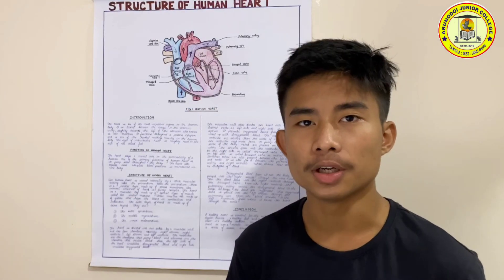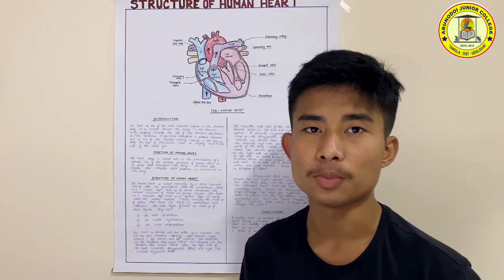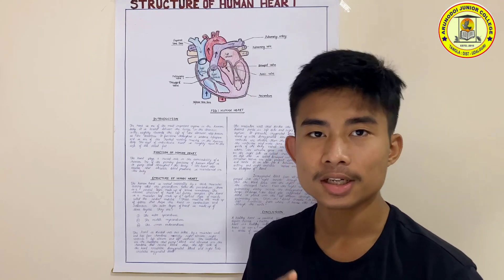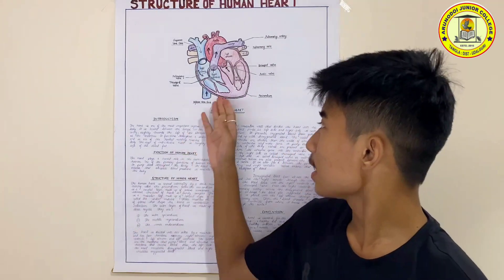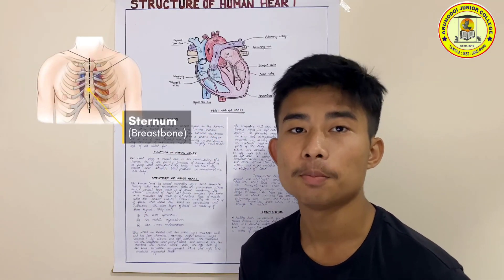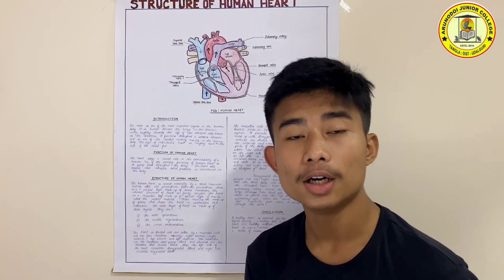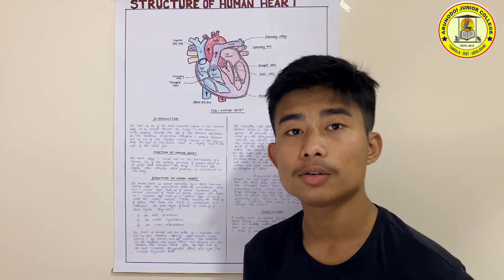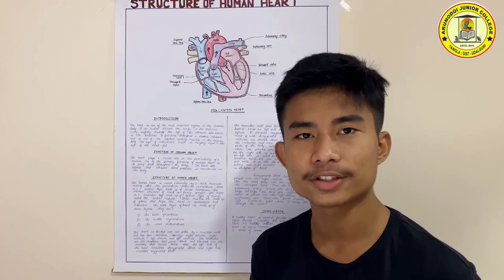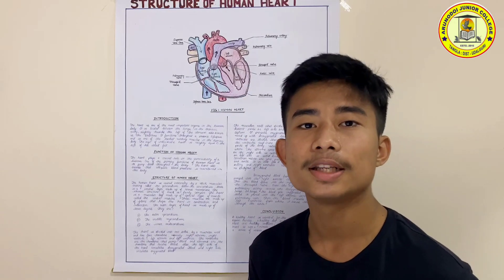The heart is one of the most important organs in the human body. It is located between the lungs in the thoracic cavity, slightly towards the left of the sternum, which is also known as the breastbone. The main function of the heart is to pump blood throughout the human body. The human heart is covered externally by a thick muscular covering called the pericardium.